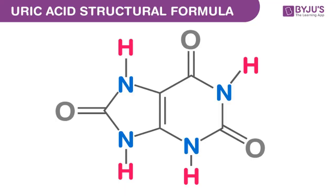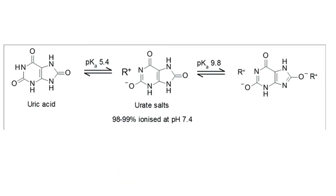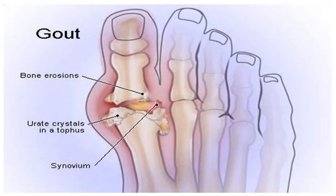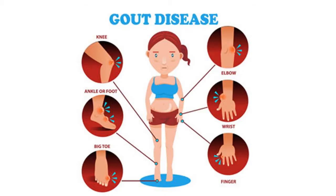Uric acid is a heterocyclic compound of carbon, nitrogen, oxygen and hydrogen with the formula C5H4N4O3. It forms ions and salts known as urates and acid urates such as ammonium acid urate. Uric acid is a product of the metabolic breakdown of purine nucleotides and it is a normal component of urine. High blood concentrations of uric acid can lead to a disease called gout and are associated with other medical conditions including diabetes and the formation of ammonium acid urate kidney stones.